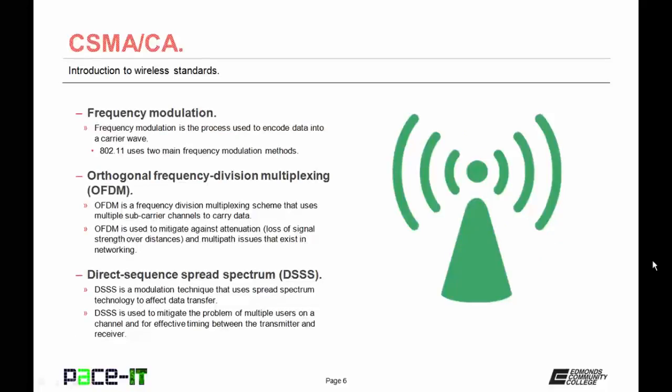Now let's talk about frequency modulation. Frequency modulation is the process used to encode data into a carrier wave. 802.11 uses two main frequency modulation methods. The first one is Orthogonal Frequency Division Multiplexing, or OFDM. OFDM is a frequency division multiplexing scheme that uses multiple subcarrier channels to carry data. It is used to mitigate against attenuation, which is loss of signal strength over distance, and multipath issues that exist in networking.